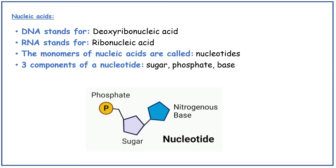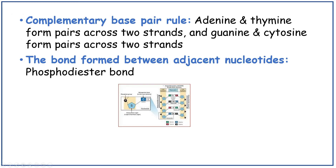Nucleic acids. DNA stands for deoxyribonucleic acid. RNA stands for ribonucleic acid. The monomers of nucleic acids are called nucleotides. There are three components of a nucleotide: a five-carbon sugar, a phosphate, and a nitrogen-containing base. Complementary base pair rule: adenine and thymine form pairs across two strands, and guanine and cytosine form pairs across two strands. A memory aid: apples on the tree, cars in the garage — so adenine pairs with thymine, cytosine pairs with guanine. The bond formed between adjacent nucleotides is called a phosphodiester bond.